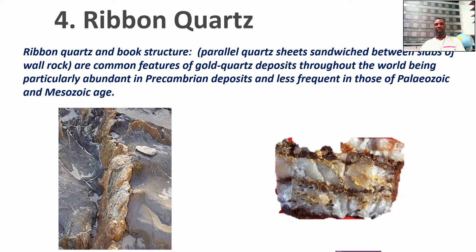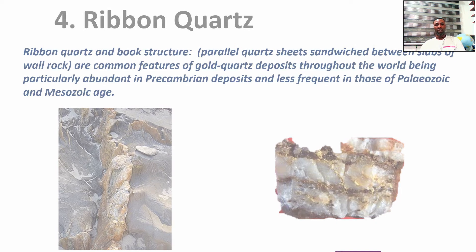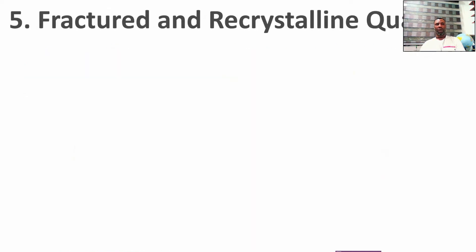Another variety is the ribbon quartz, which exhibits ribbon-like characteristics. This is the kind of quartz you see sandwiched between slabs of rock. They are common features of gold deposits throughout the world. You need to look at these kinds of quartz during your mapping.